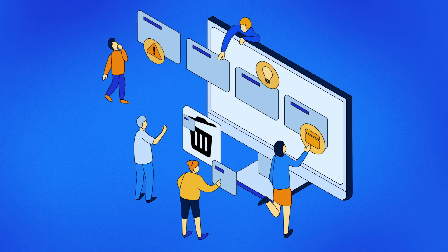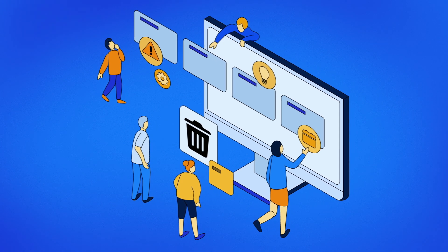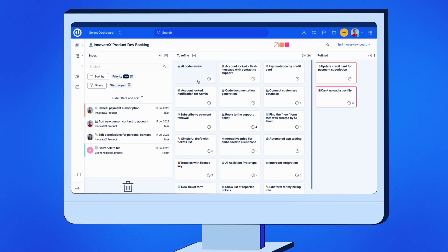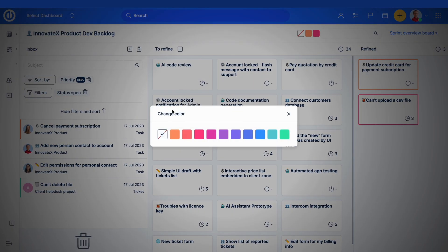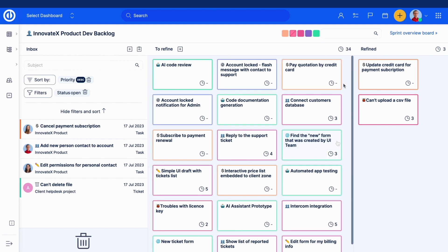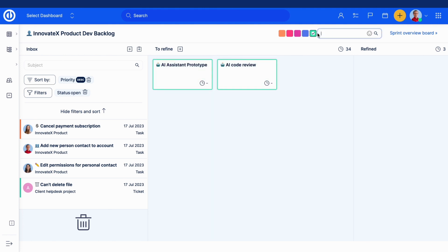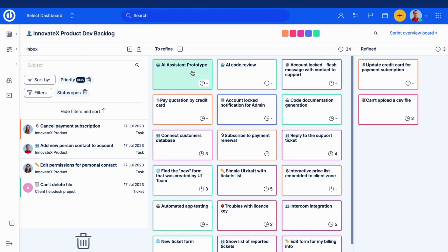Thanks to Easy Redmine 13, you can keep your backlog clear and up to date. You can color code backlog items, search them by keyword or emoji, and sort them as needed, all without any prior setup.